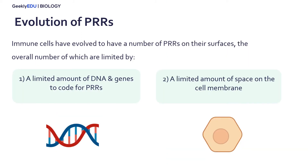The innate immune system is thought to have evolved as an earlier form of immunity compared to the adaptive response. The number of PRRs on the surfaces of our innate immune cells is limited by mainly two things. The first is that all the PRRs on the cell membrane are encoded in the DNA of that cell, and our cells only have a certain amount of DNA to allocate for all different parts — so it can only delegate a certain amount of its DNA to these PRRs.